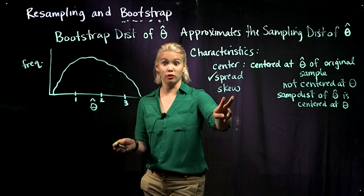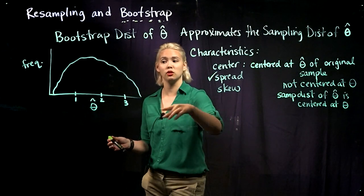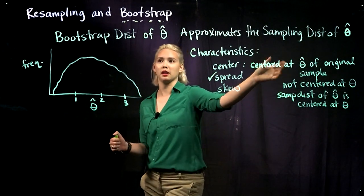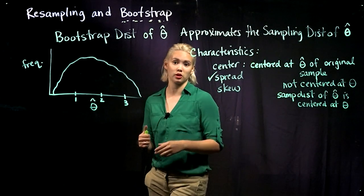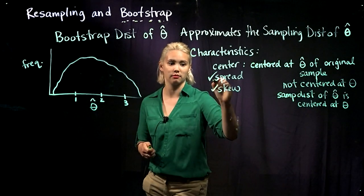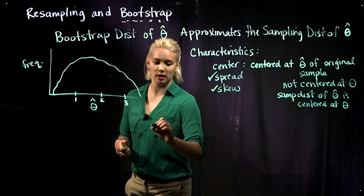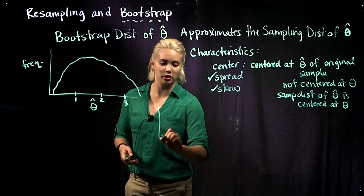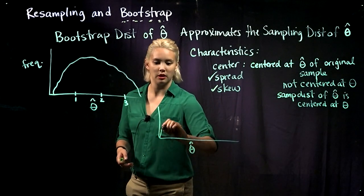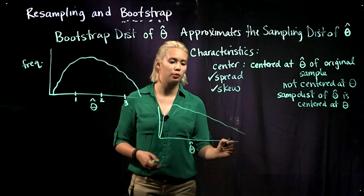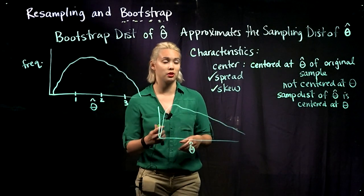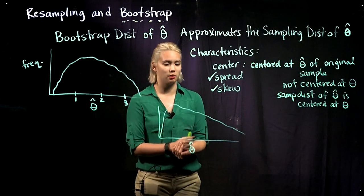Next one: skew. Does the skew of the sampling distribution of theta hat get approximated by the skew of the bootstrap distribution of theta hat? The answer for that one is also yes. So if we end up plotting our bootstrap distribution and it looks pretty skewed — maybe something like that — then we can know that the sampling distribution of theta hat is also going to be pretty skewed.